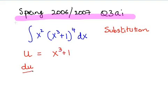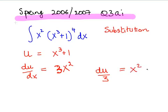Let us find the derivative of that. du/dx is equal to 3x squared plus 0. We are going to re-express this as du divided by 3 equals x squared dx. The reason for that is that we have an x squared term here and a dx term here.